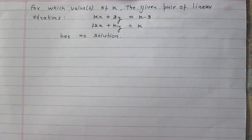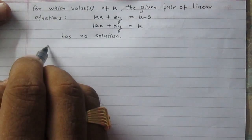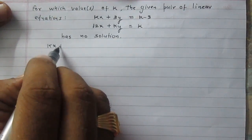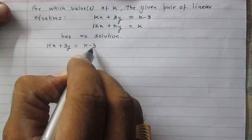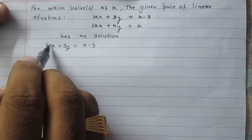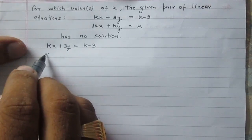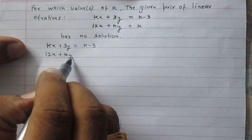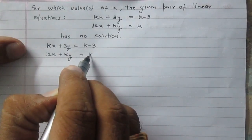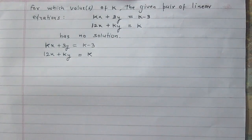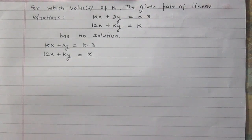In this question we are given a pair of linear equations. The first equation is kx + 3y = k - 3, and the second equation is 12x + ky = k. We are to find the value of k for which this pair of linear equations has no solution.